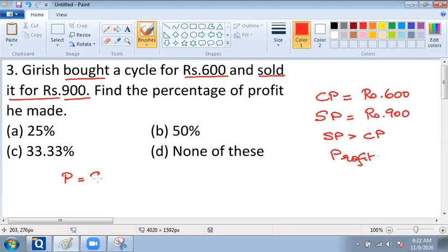Profit is equal to selling price minus cost price and that is 900 minus 600, that is equal to Rs. 300.